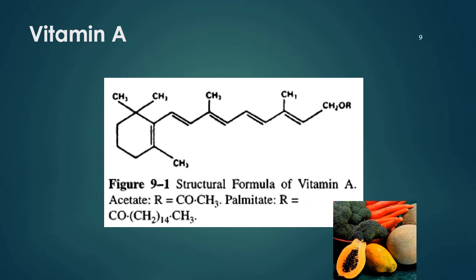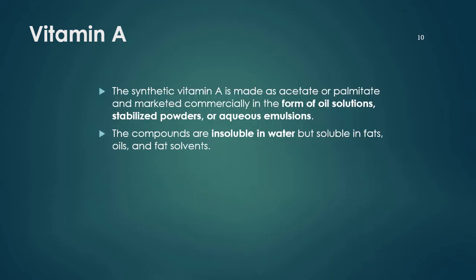The structure of vitamin A contains five conjugated double bonds, where R is represented by COCH3 (acetate) or palmitate. If you look at fruits and vegetables containing vitamin A, such as carrots and papaya, they are orange-colored. Vitamin A can generally be obtained from orange or red-colored fruits and vegetables. Synthetic vitamin A can be made as acetate or palmitate and marketed commercially in the form of oil solution, stabilized powder, or aqueous emulsions. The compounds are insoluble in water but soluble in fats, oils, and fat solvents.